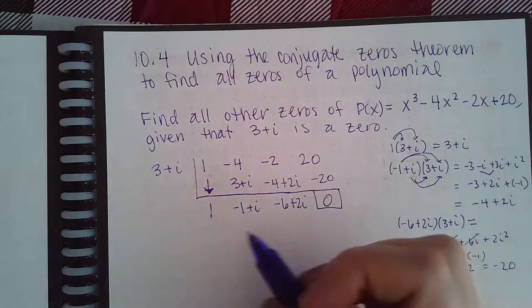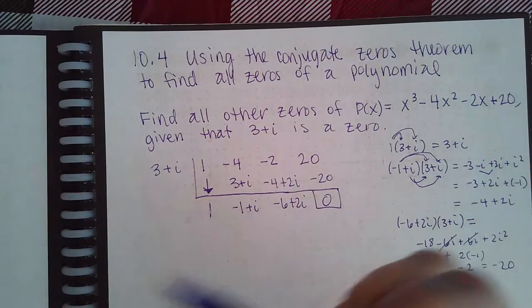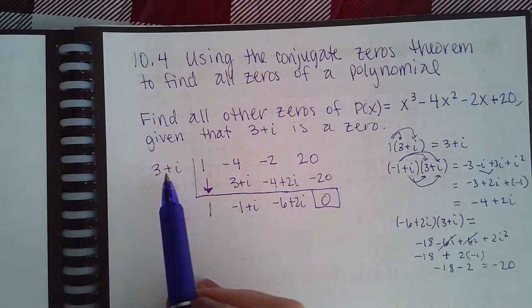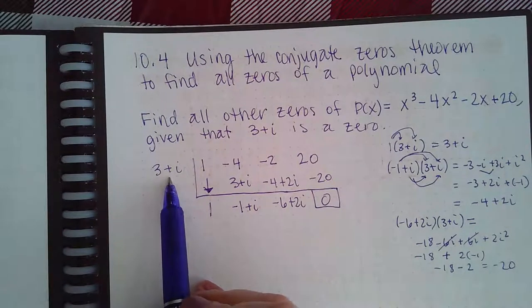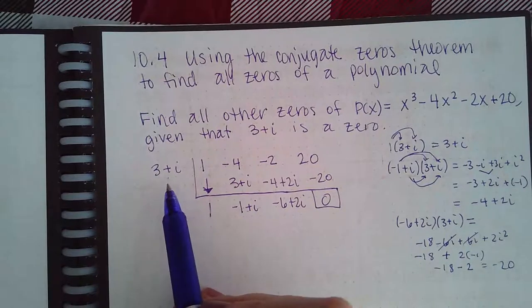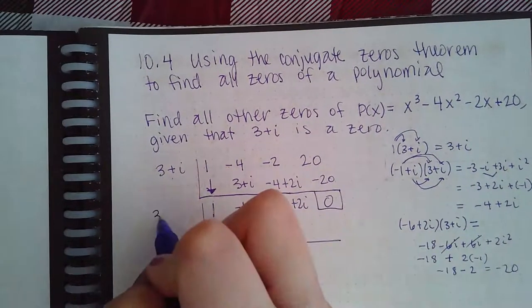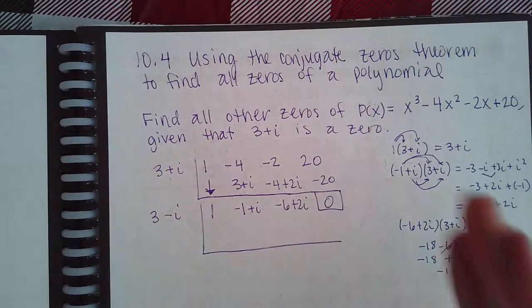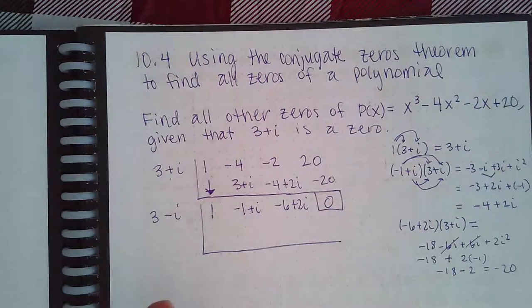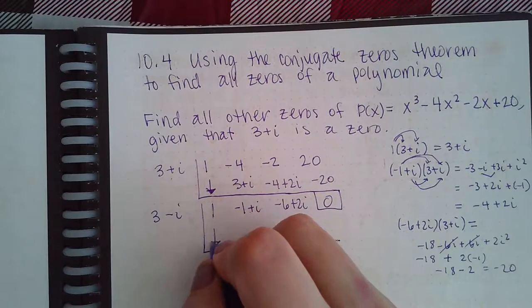Now we're going to use the conjugate of this value. Since for imaginary or complex zeros they always come in pairs - the conjugates together - the conjugate of this is actually 3 minus i. We're going to follow the whole process again with 3 minus i, so bring down the first term.